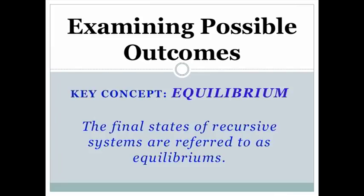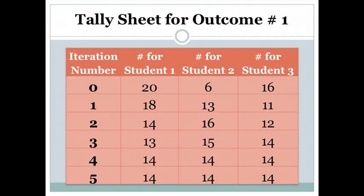In some scenarios, each person ends up with the same number of candies. An example of this is if, in a certain group, one student begins with twenty, one begins with six, and the third begins with sixteen pieces, as was the case in our demonstration. Here you see the completed tally sheet for such a distribution. Notice that in this example, each student ends up with fourteen pieces.